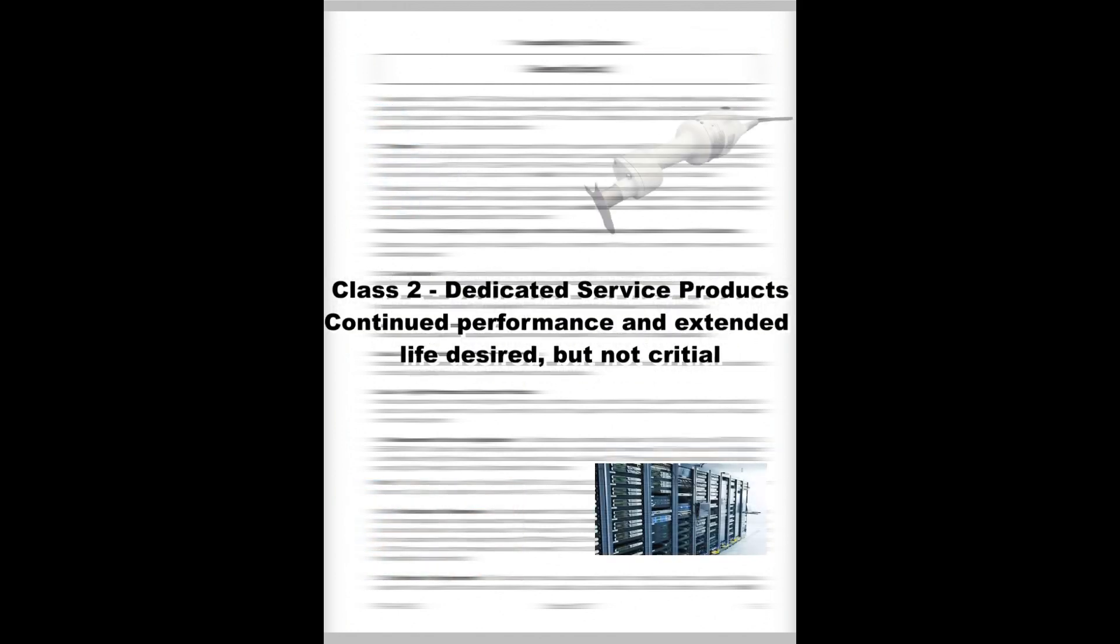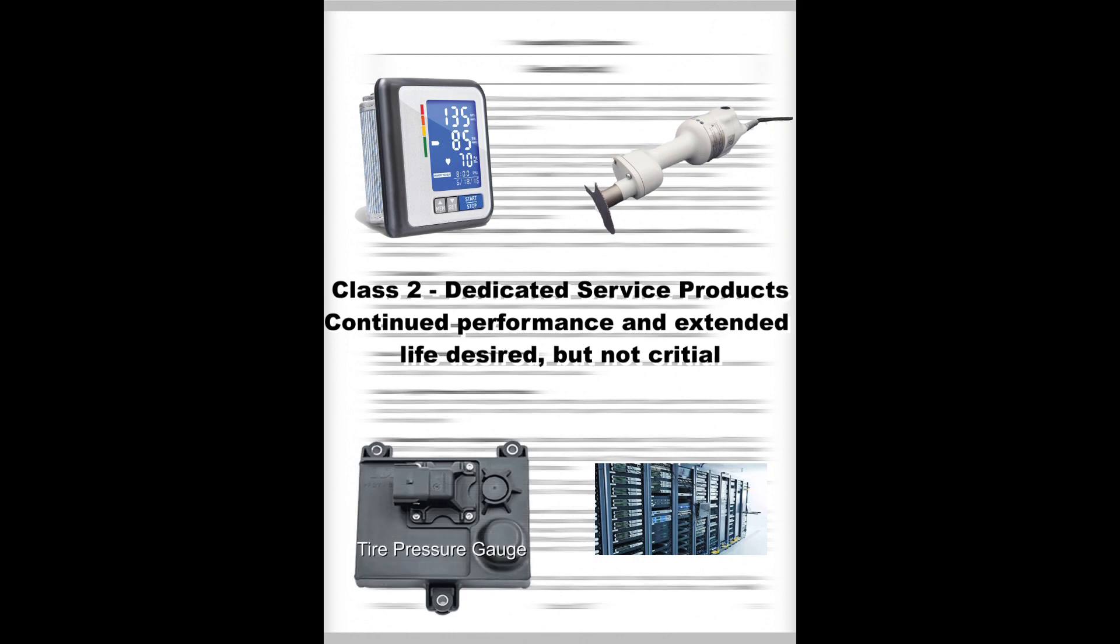Class 2, Dedicated Service Products, are assemblies where continued performance and extended life are desired but not critical. Typically, the end-use environment would not cause failures.